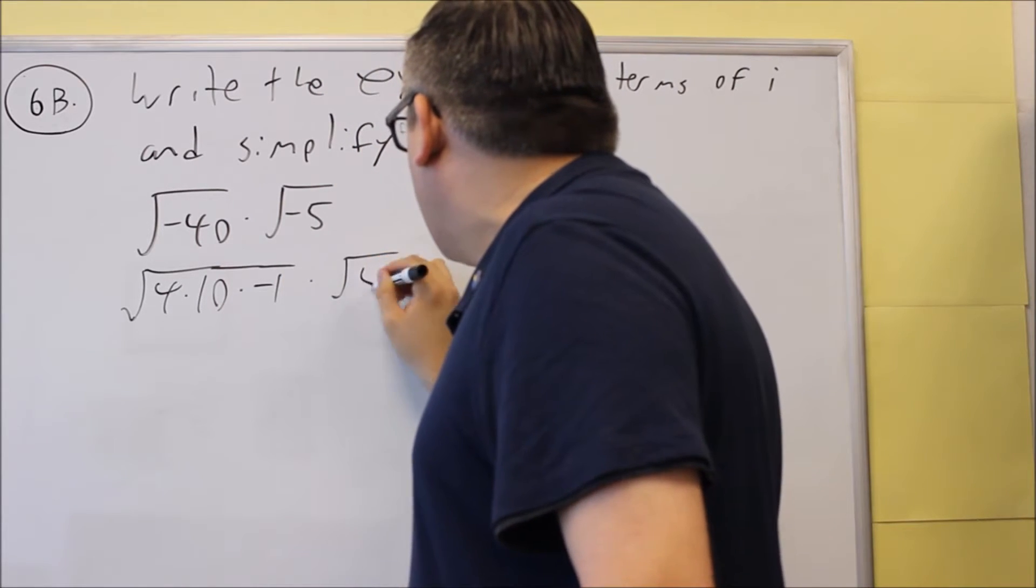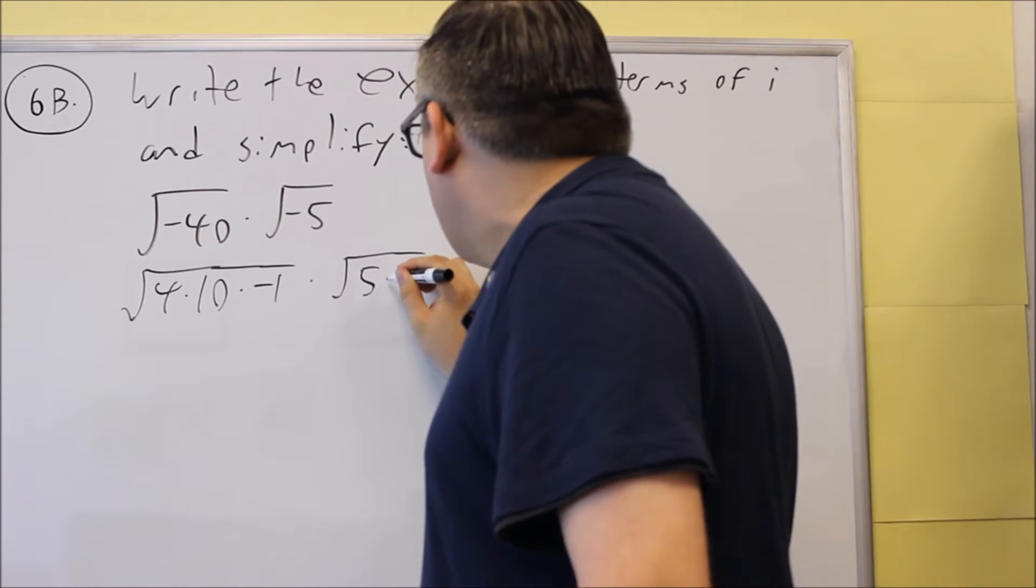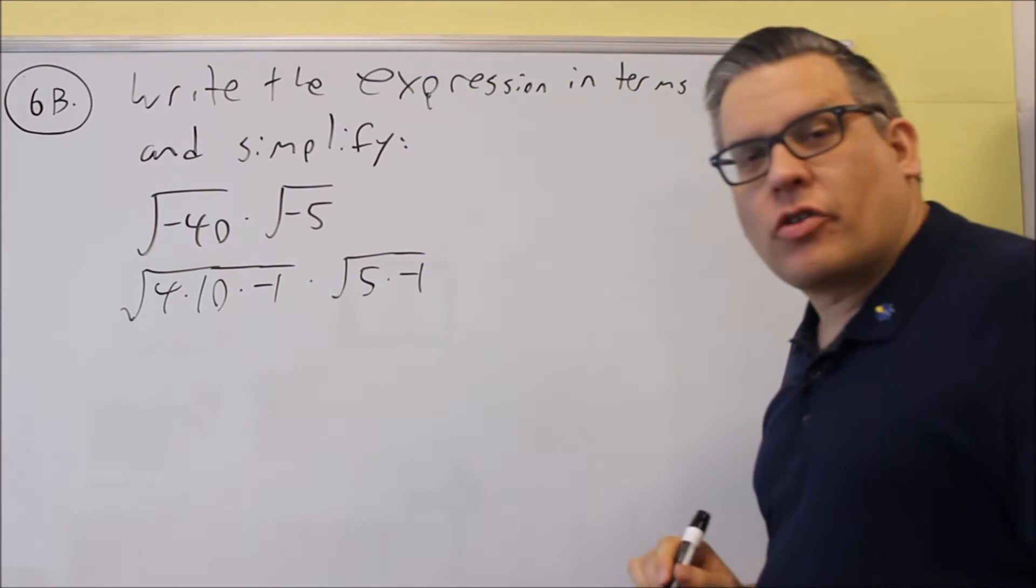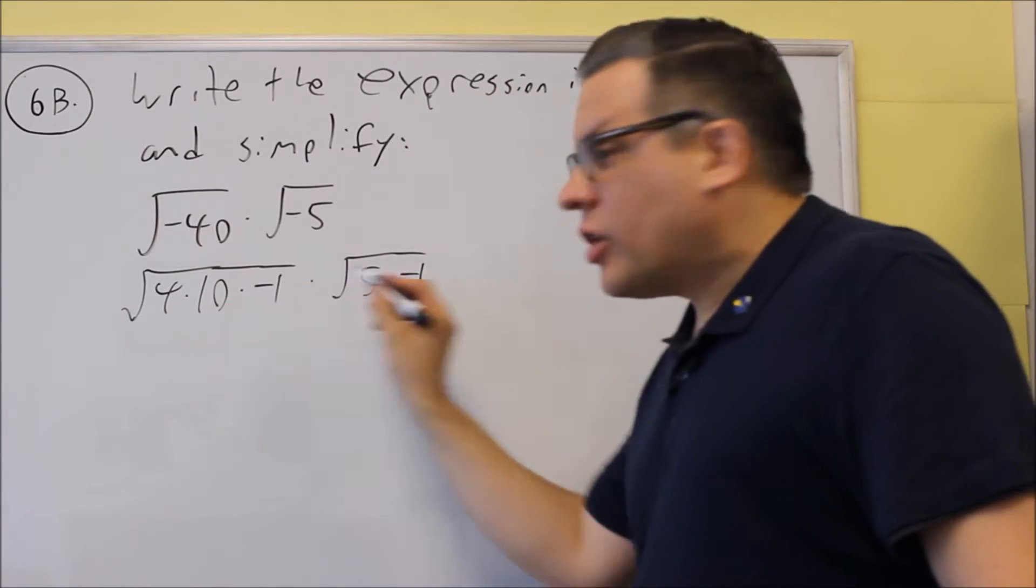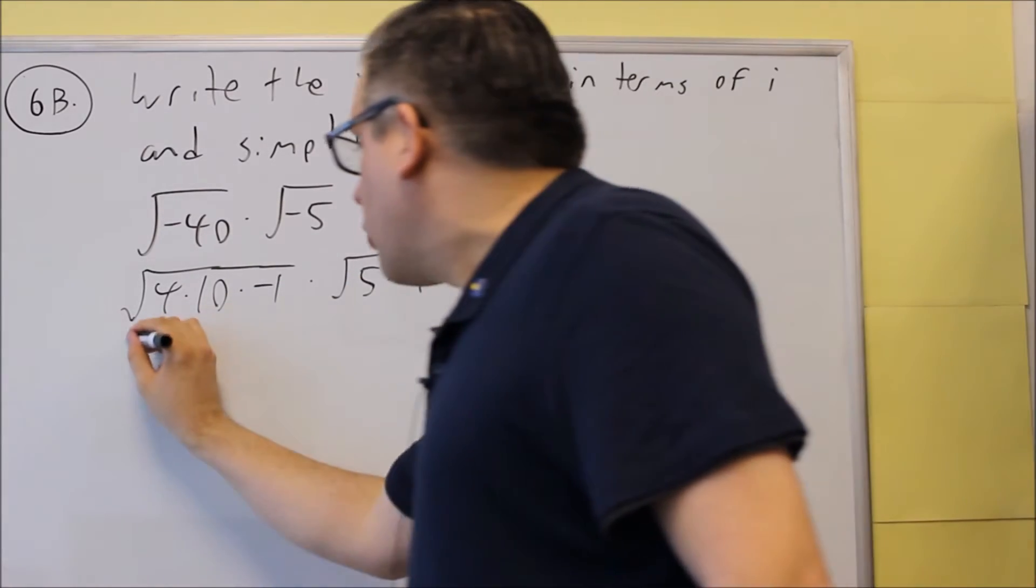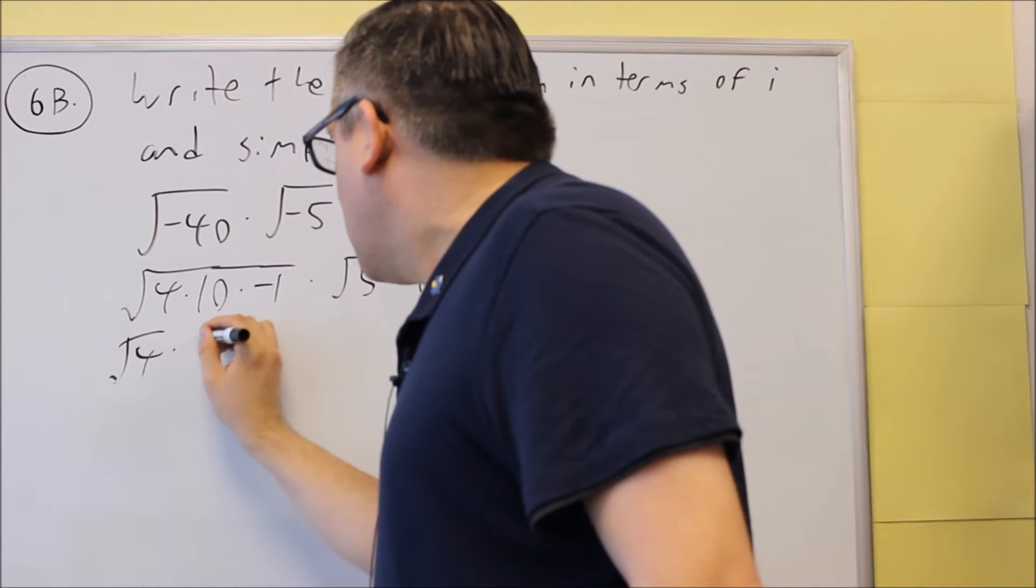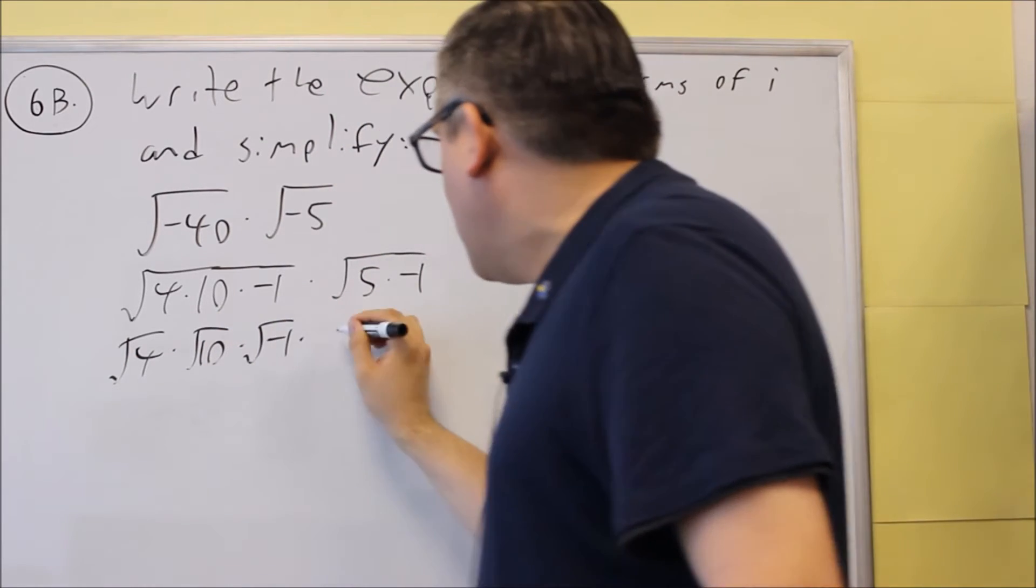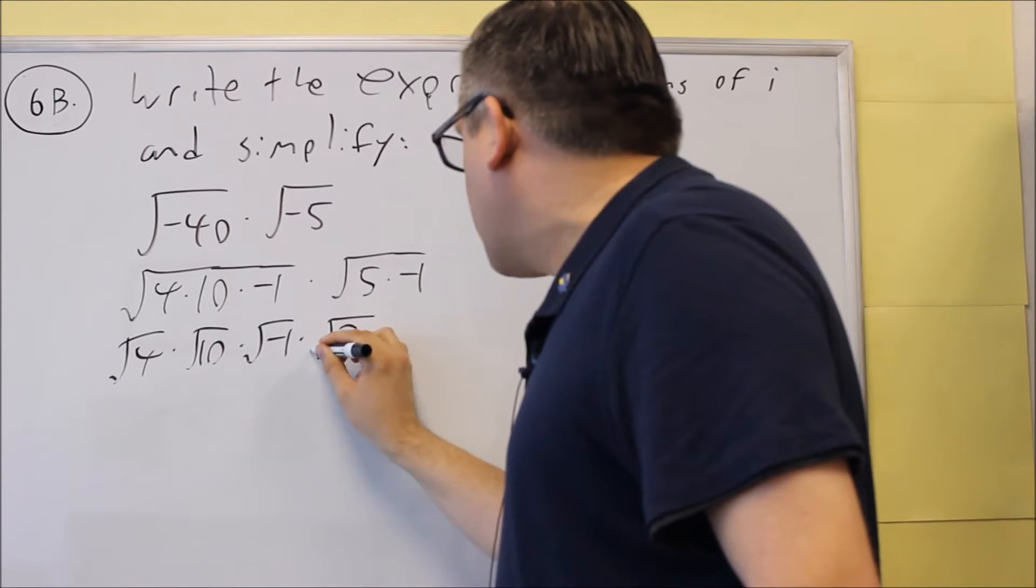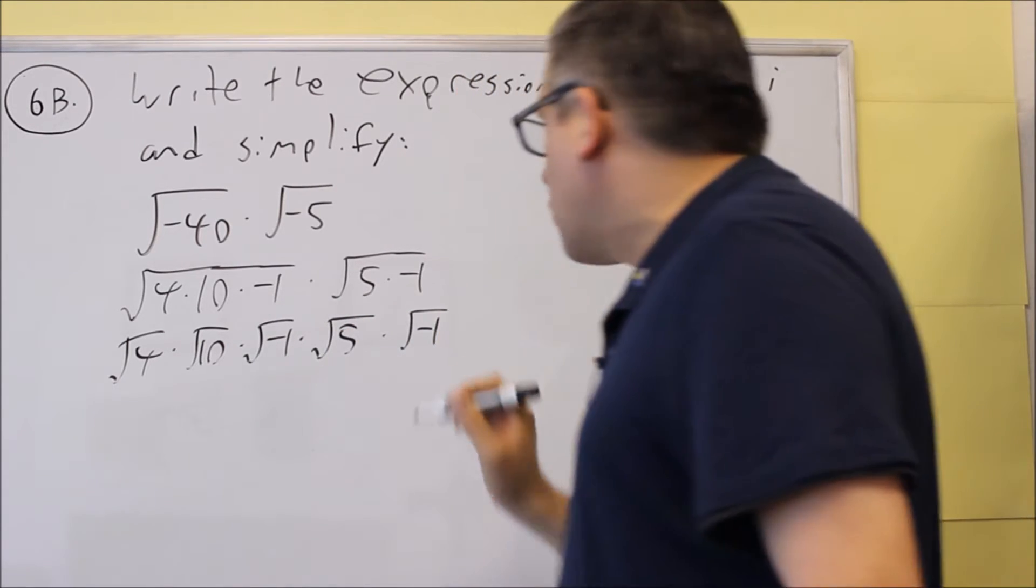For this other one over here, we're going to break that up into square root of 5 times negative 1. Then we're going to take the square root of each of these separately. We're going to do square root of 4, square root of 10, and square root of negative 1. And this one we can break up into square root of 5, square root of negative 1.